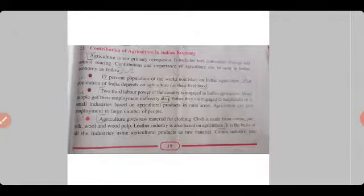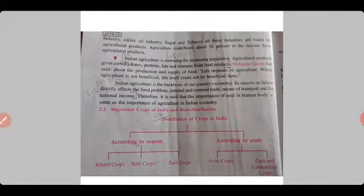Agriculture gives raw material for clothing. Cloth is made from cotton, jute, silk, and wood pulp. Paper is made from wood pulp. The leather industry is also based on agriculture. It is the basis of all industries using agriculture products as raw material — cotton industry, jute industry, edible oil industry, sugar and tobacco industries are all based on agriculture products.